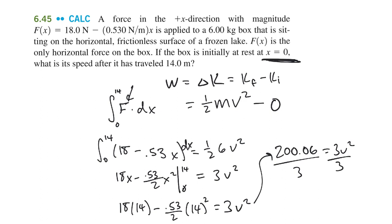And you'll get 66.7 equals v squared, and then you've got to take the square root of that, which is going to give you 8.17 meters per second.